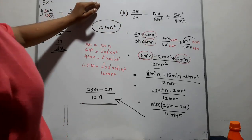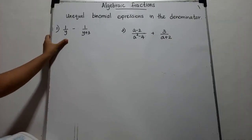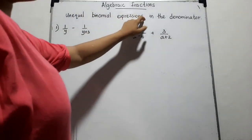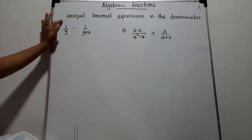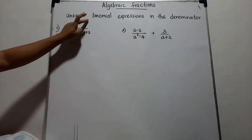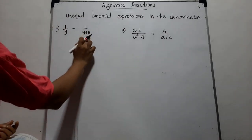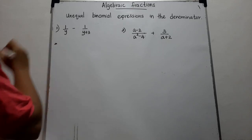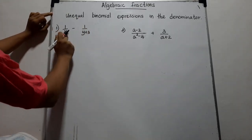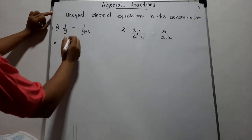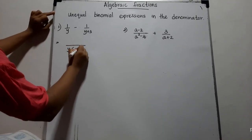Now let's go to the next part — let's learn about unequal binomial expressions in the denominator of algebraic fractions. Here we have: 1 over Y, subtract 1 over Y plus 3. The denominators are not equal, so we have to obtain the LCM. You know how to obtain the LCM: the LCM of Y and Y plus 3 is Y times (Y plus 3).